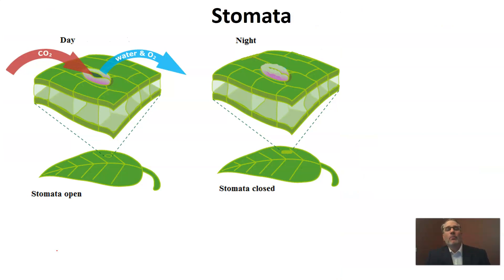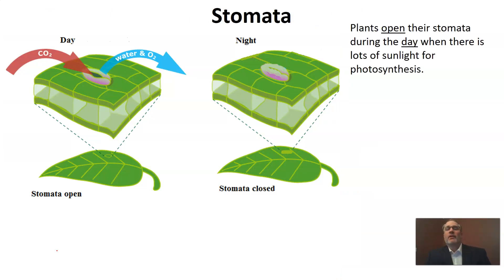So why do they open and close? Plants generally open their stomata during the day because during the day we have a lot of sunlight for photosynthesis. When photosynthesizing, they need to absorb carbon dioxide from the air, so during the day those stomata are open, allowing carbon dioxide in. In addition, transpiration is used for cooling the plant, and it's warmer during the day, so water needs to exit through the stomata to cool the plant, with oxygen gas — the waste product of photosynthesis — also exiting.